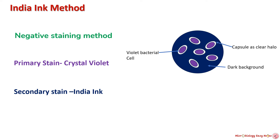The India ink method stains both the bacterial cell and its background but not the capsule. As a result, the capsule appears as a bright halo between the violet bacterial cell and a darker background. Two types of stain are used: first, crystal violet, which is a basic stain that stains the bacterial cell violet; and second, India ink, which is an acidic stain that stains the cell background darker. The capsule appears as a clear halo after the completion of the staining process.